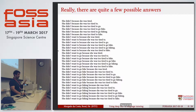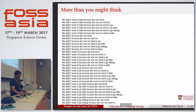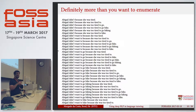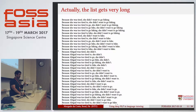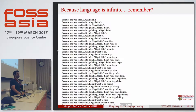But actually, there are many more possibilities as you may imagine, and I'm not going to read all of these. And if you think about it, there are more than you thought there were. I can continue going and there's definitely more than you want to enumerate. So enumeration is not going to work for you. Because as I said, the list is very long because language is infinite. So you have a problem. How do you actually go about this?